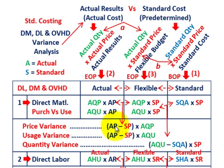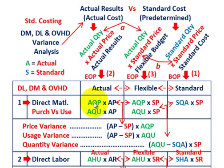The price variance is the difference between the actual price and the standard price times the actual quantity purchased — this is where we're comparing actual versus flexible amount. Everything is color-coded to make it easy to follow. The actual amount was actual quantity purchased times actual price; the flexible amount was actual quantity purchased times the standard price.